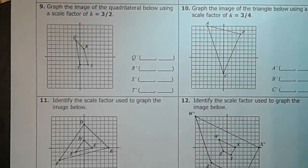All right, here's some extra notes on dilations if you need them. So we're going to take a look at number nine in your notes. Graph the image of the quadrilateral below using the scale factor of k equals three halves.